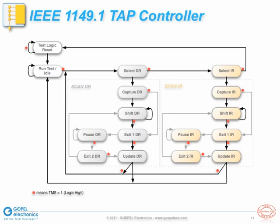The state functions in either the ScanIR or ScanDR branch are very similar. For example, the Capture IR state is used to capture a fixed value into the instruction register. With the Shift IR state, that captured value can be shifted or scanned out of the device's TDO pin, while a new instruction can be loaded through the device's TDI pin. By transitioning through the Update IR state, that previously loaded instruction becomes active and selects the test data register associated with it.